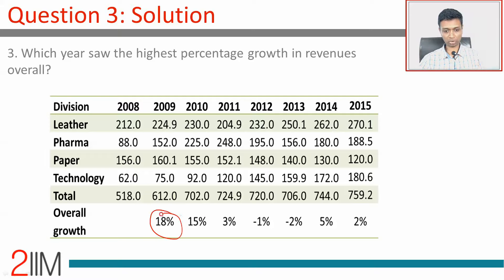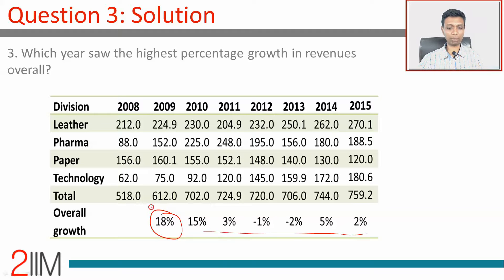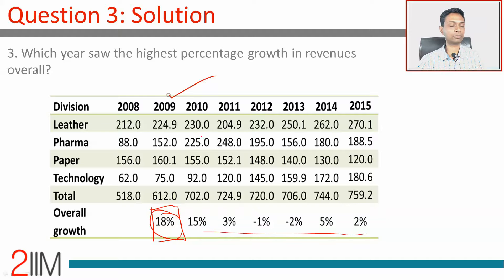The growth rate in 2009 is 18 percent, which is far higher than any other year. So the year that saw the maximum growth rate was 2009. Simple enough question, once you fill in all the data.